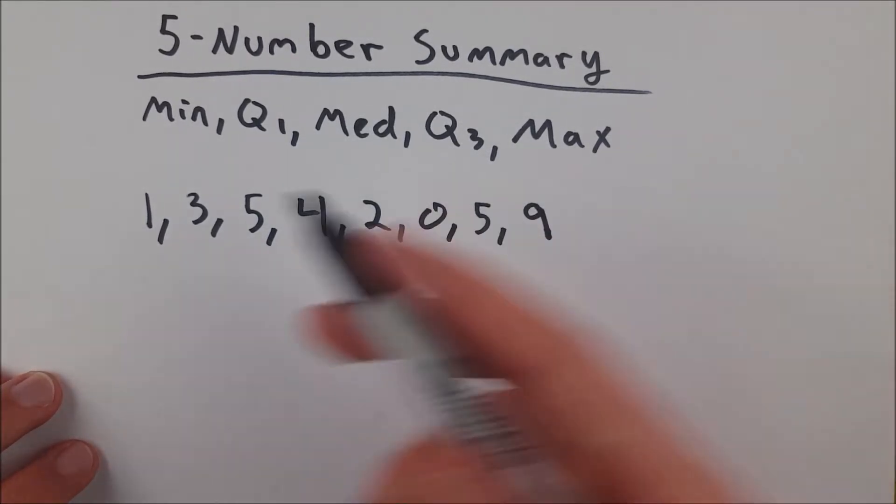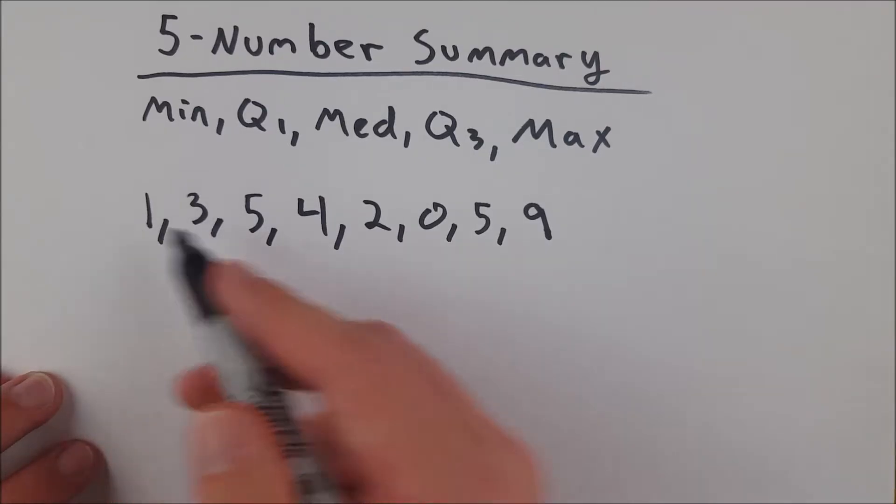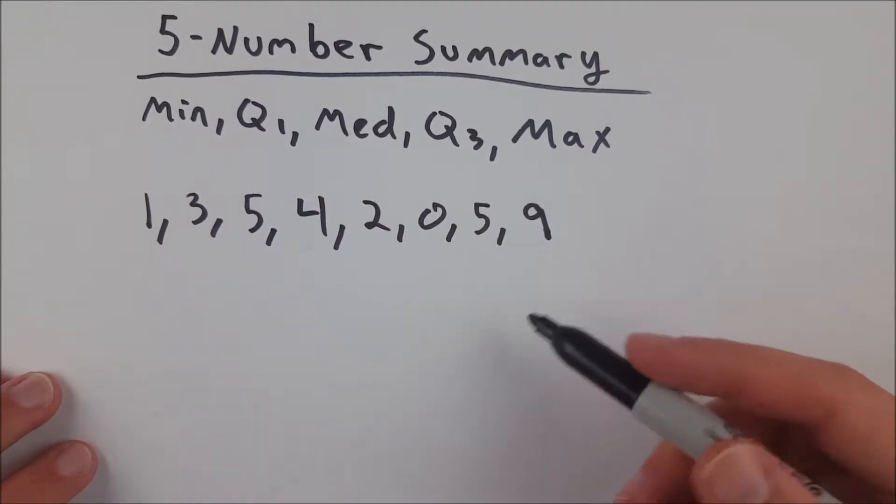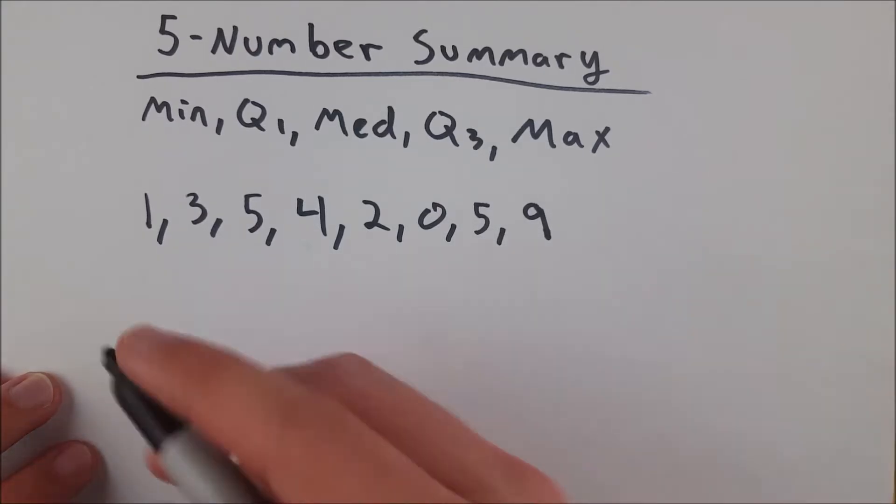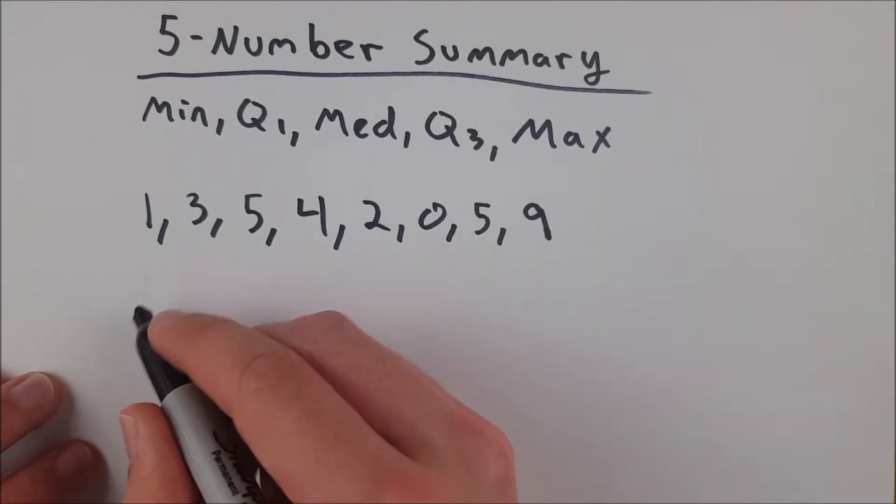First thing you're going to do is list the numbers from least to greatest. You could also list them from greatest to least, but least to greatest generally is more intuitive. So let's do that.